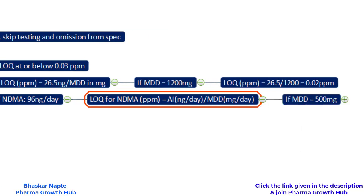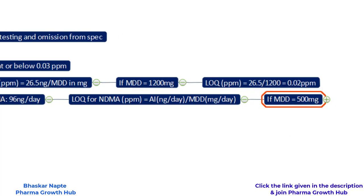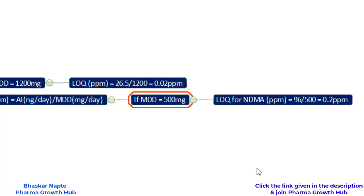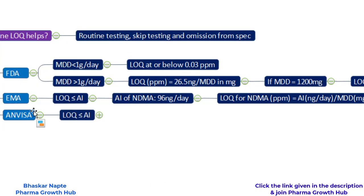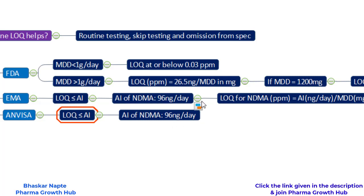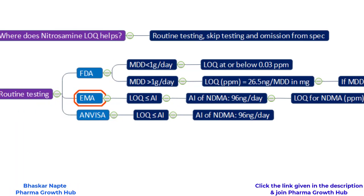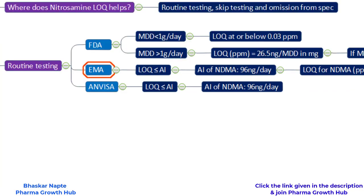For example, if the maximum daily dose is 500 milligram per day, using the formula: LOQ = 96 ng/day ÷ 500 mg/day = 0.2 ppm. So if your test procedure has a LOQ of 0.2 ppm or less, the method is suitable for analyzing and releasing routine batches. NVSA Brazil also states that the LOQ should be less than or equal to the acceptable intake — the same as EMA's requirement.